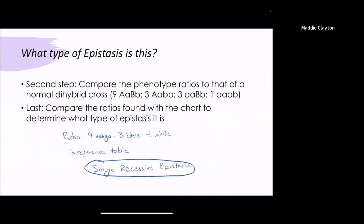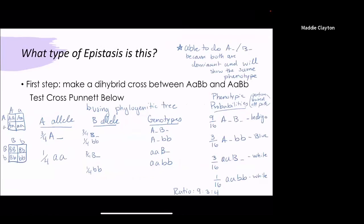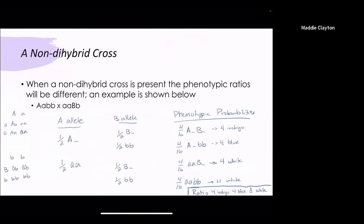Your next step is to compare the phenotype ratios to that of a normal dihybrid cross which is 9:3:3:1. When you do this you look at that table to find what form you have. We know that we have nine indigo three blue and four white. If we go back to the reference table we see that 9:3:4 is a single recessive type of epistasis.